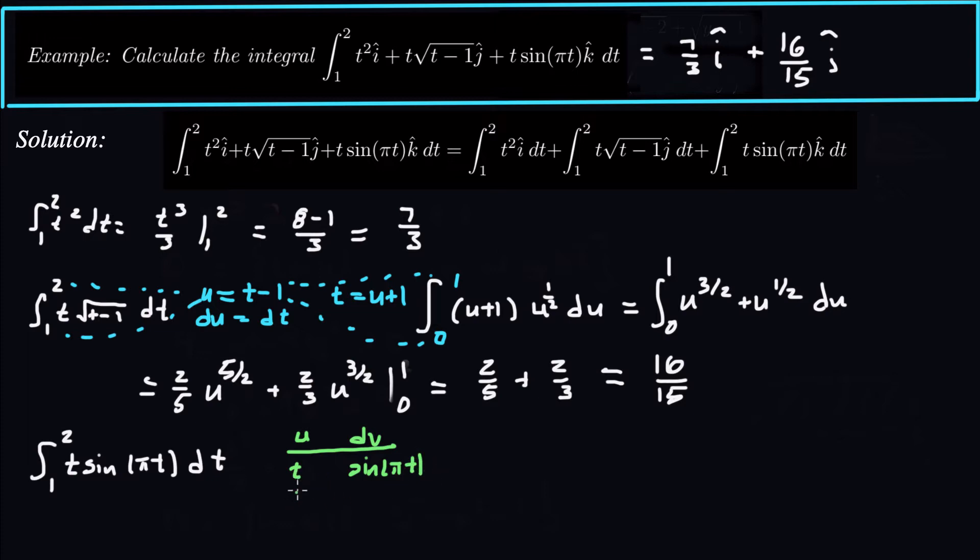I'll use t for u and sine πt for dv. Now I differentiate u all the way down to zero for a polynomial and integrate over here. So negative 1 over π cosine πt, and negative 1 over π² sine πt.